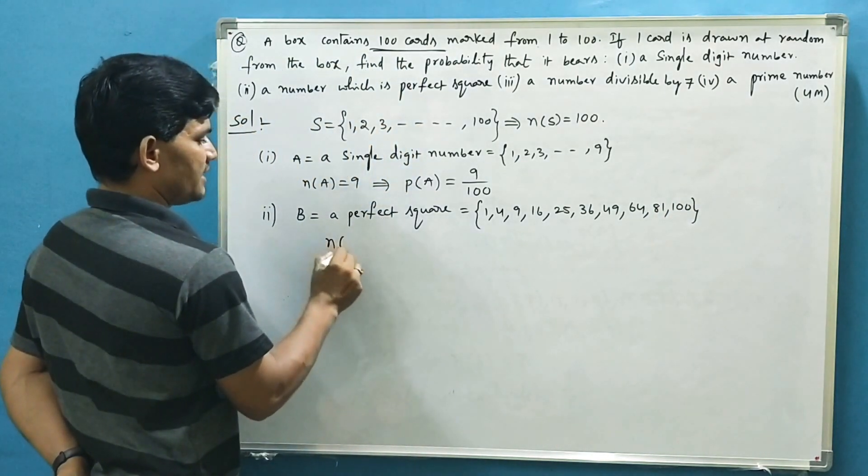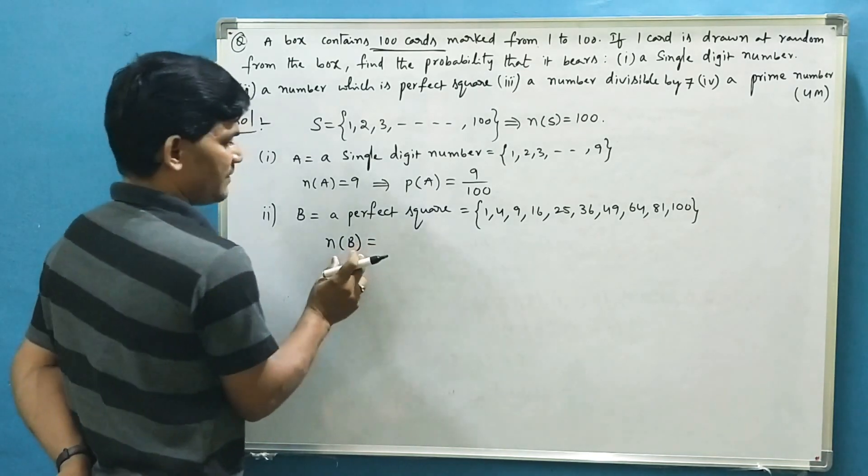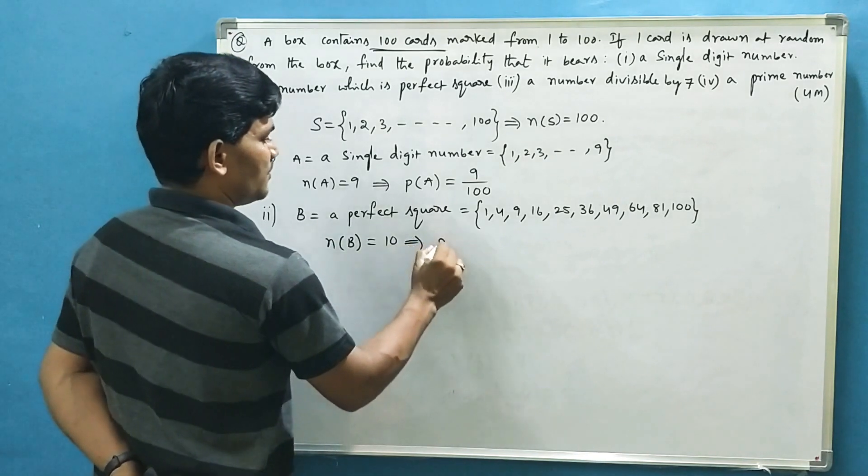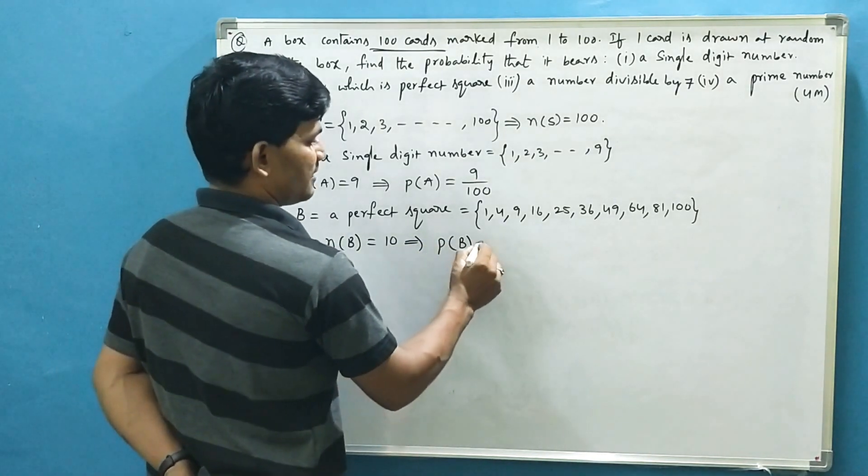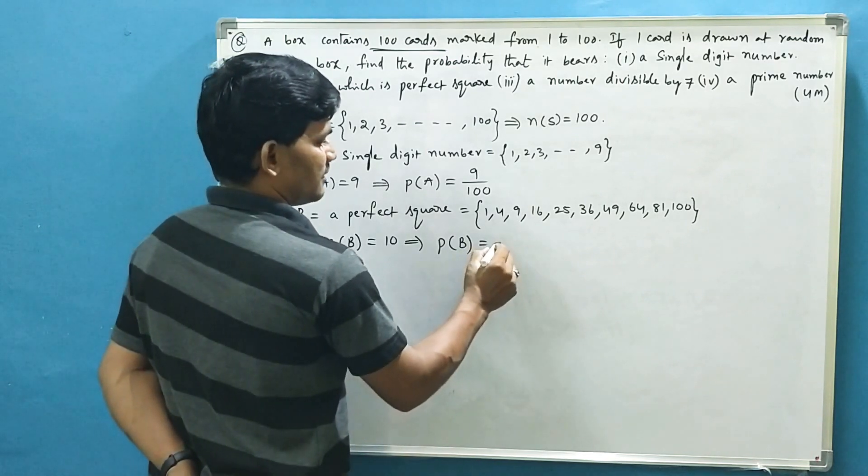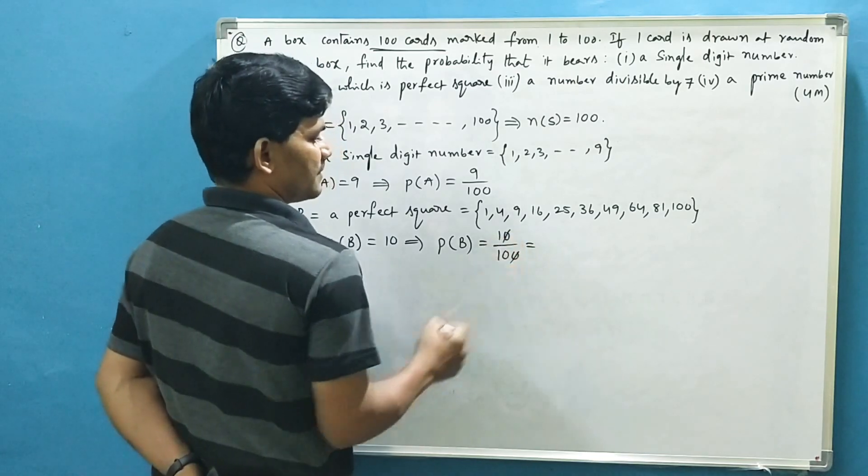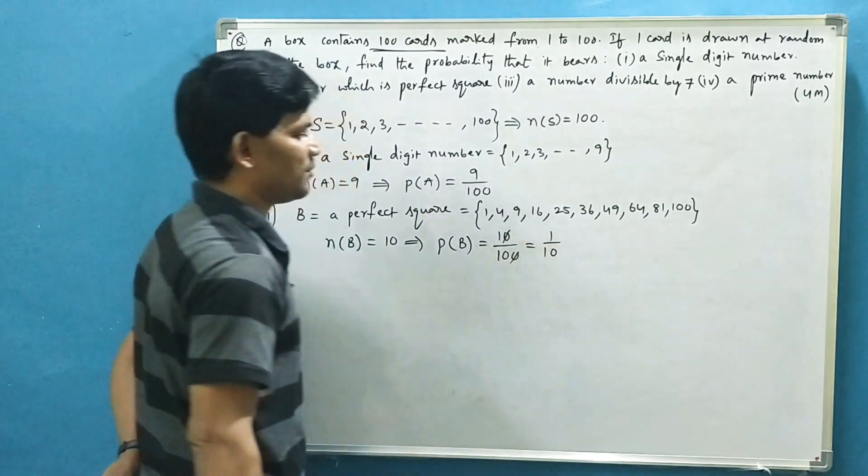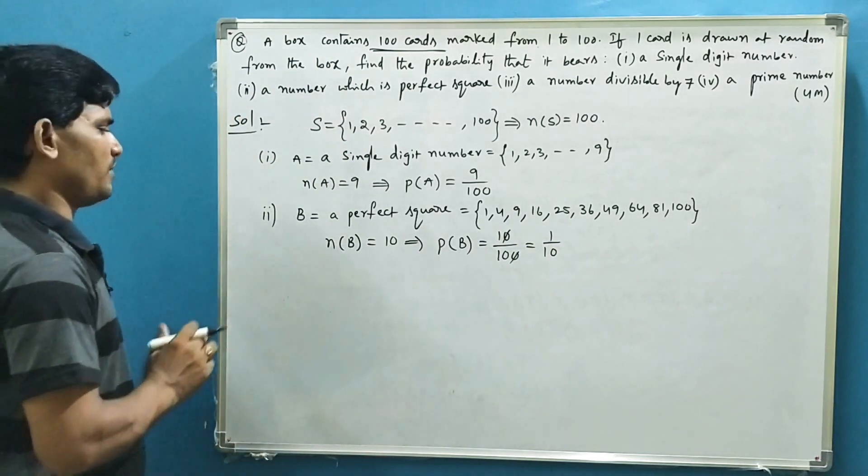Totally there are 10 square numbers. Number of favorable outcomes are 10, which implies probability of getting a perfect square number is 10 by 100. 10 gets cancelled, you will get 1 by 10. So this is the probability of getting a card having a perfect square number.